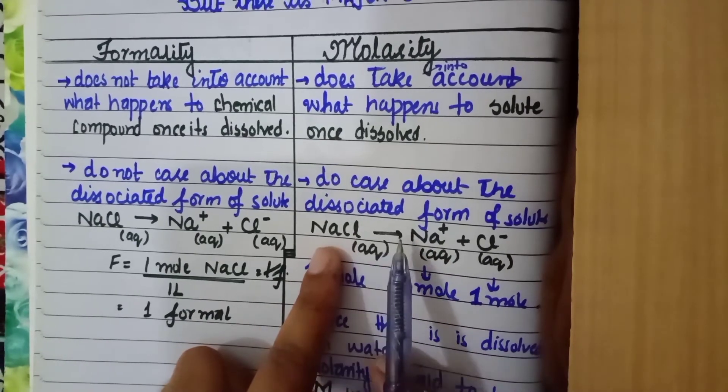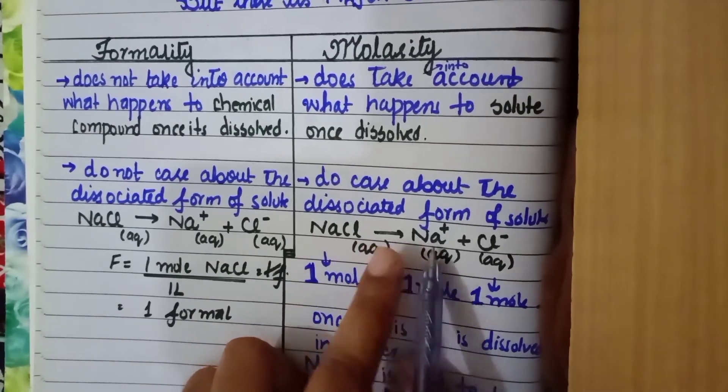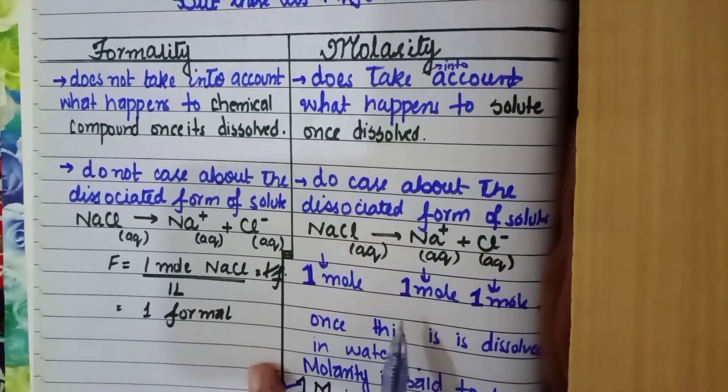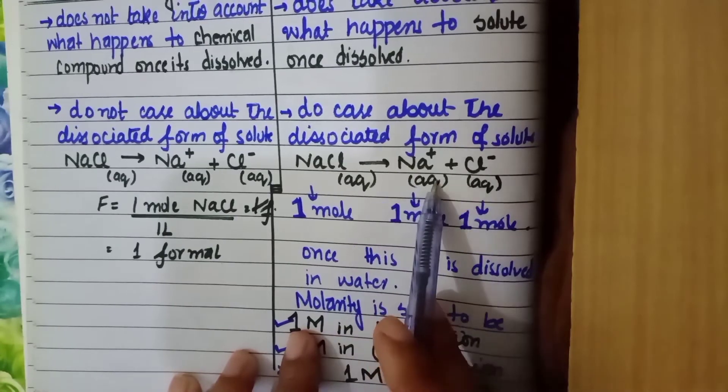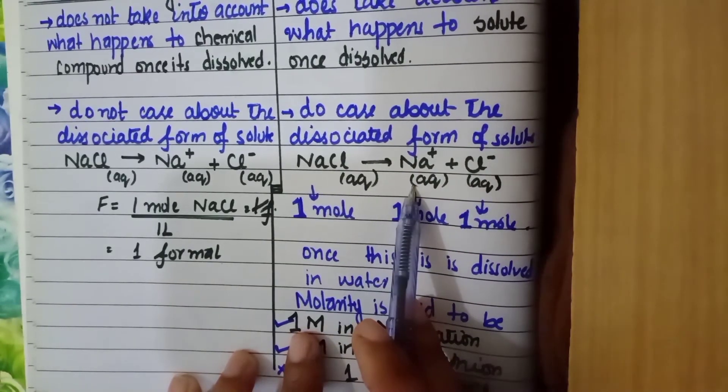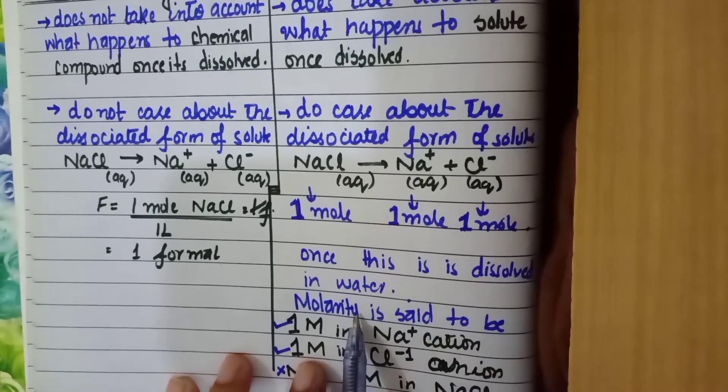For example, NaCl is dissolved in water and dissociates into sodium ion and chloride ion. We say that once it is dissolved in water, molarity is said to be one molar in sodium cations and one molar in chloride ions.